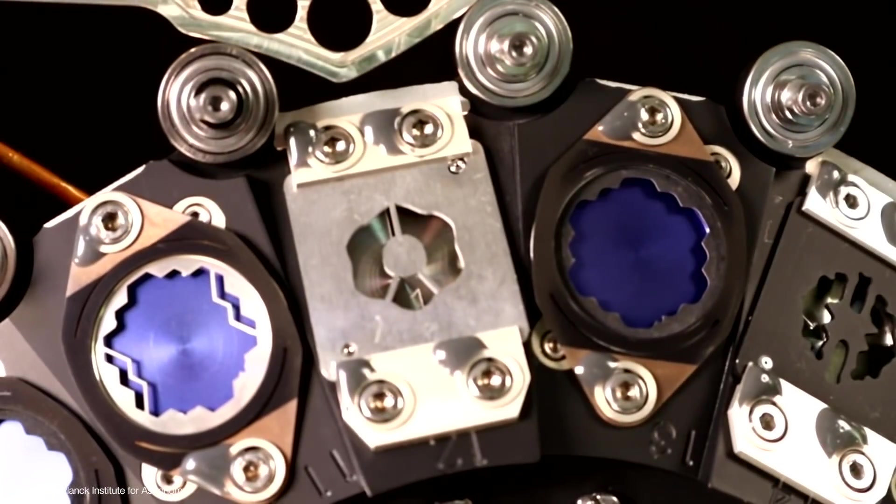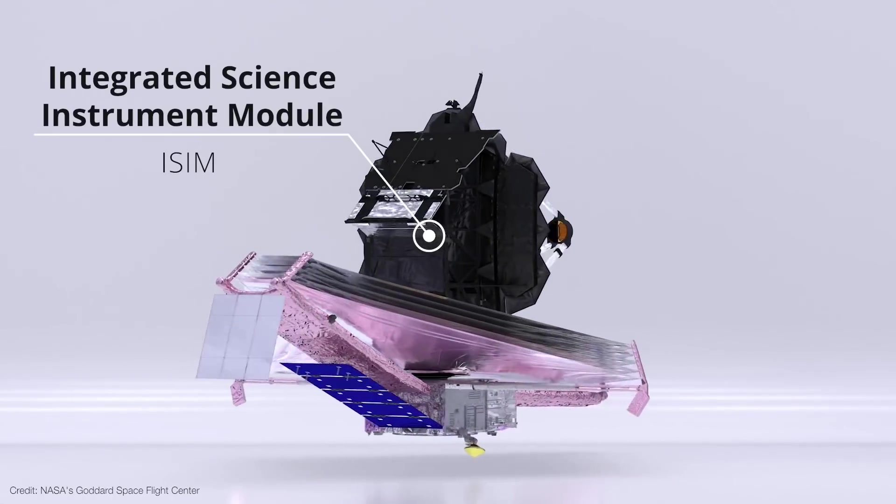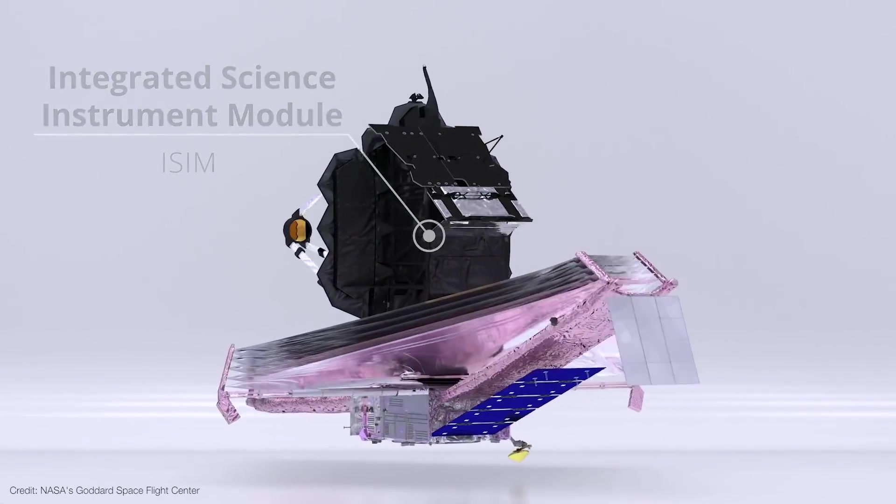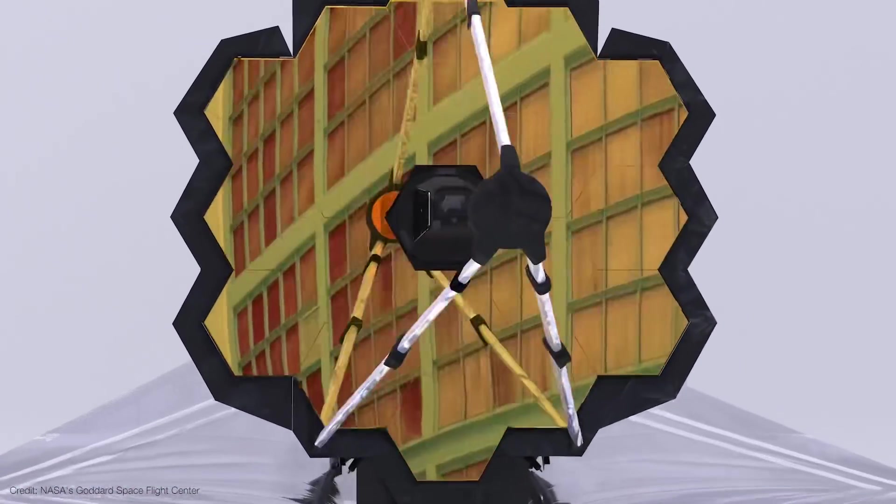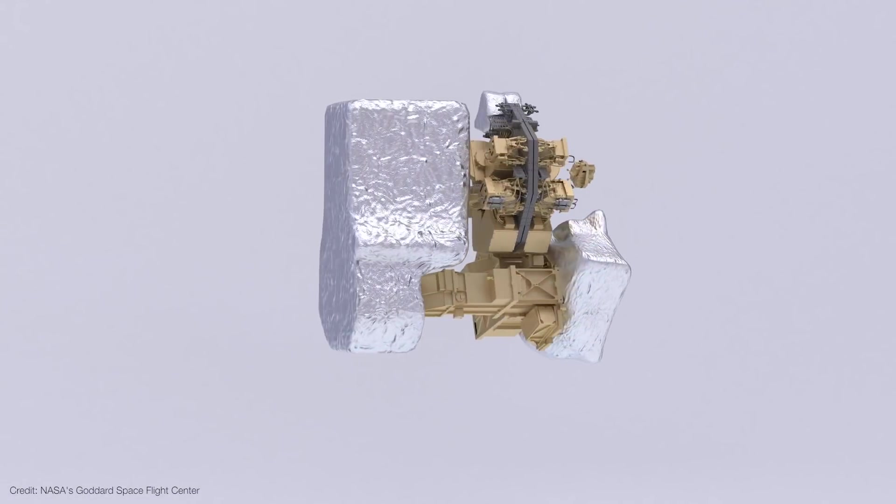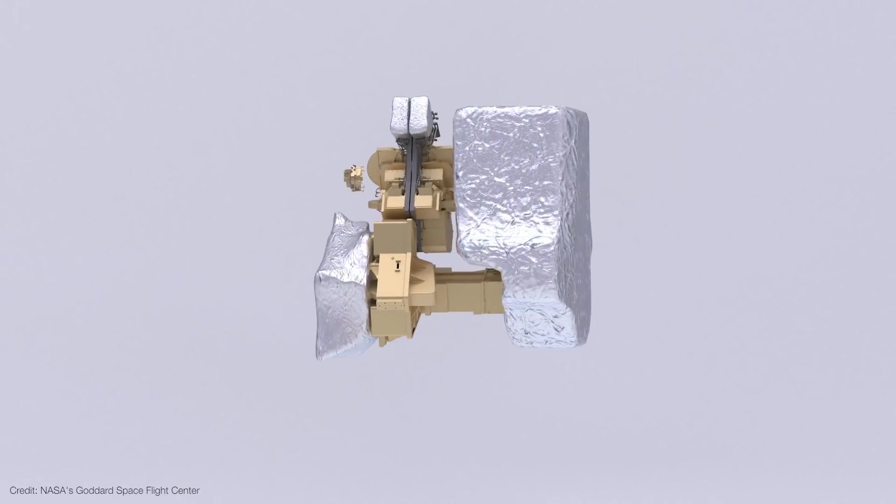MIRI is one of Webb's four science instruments. They're housed inside the Integrated Science Instrument Module, or ISIM, located behind Webb's primary mirror. Although they weren't designed to be swapped out and replaced like on Hubble, Webb's instruments partially duplicate some of each other's capabilities and in some cases have fully redundant copies of their own hardware on board.